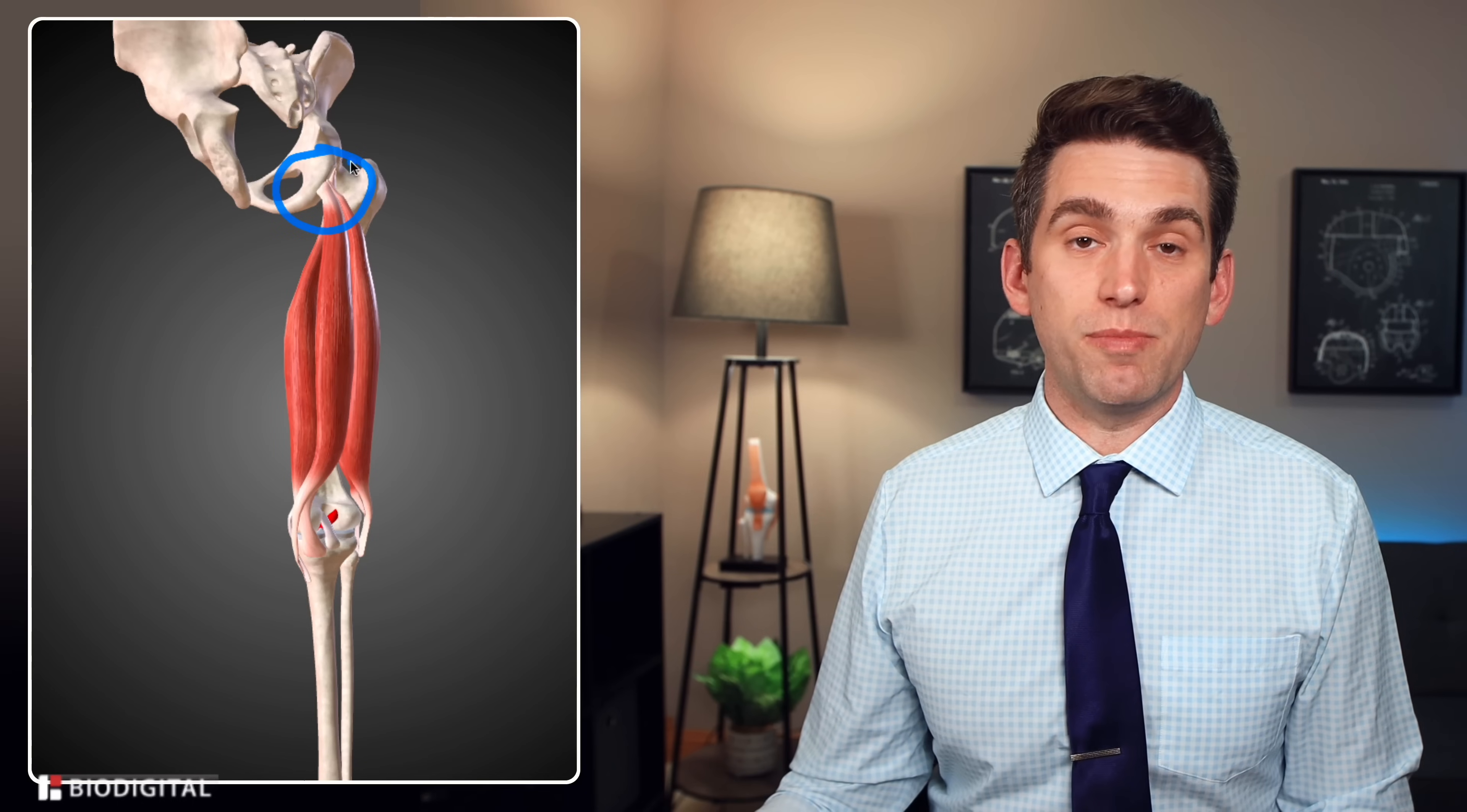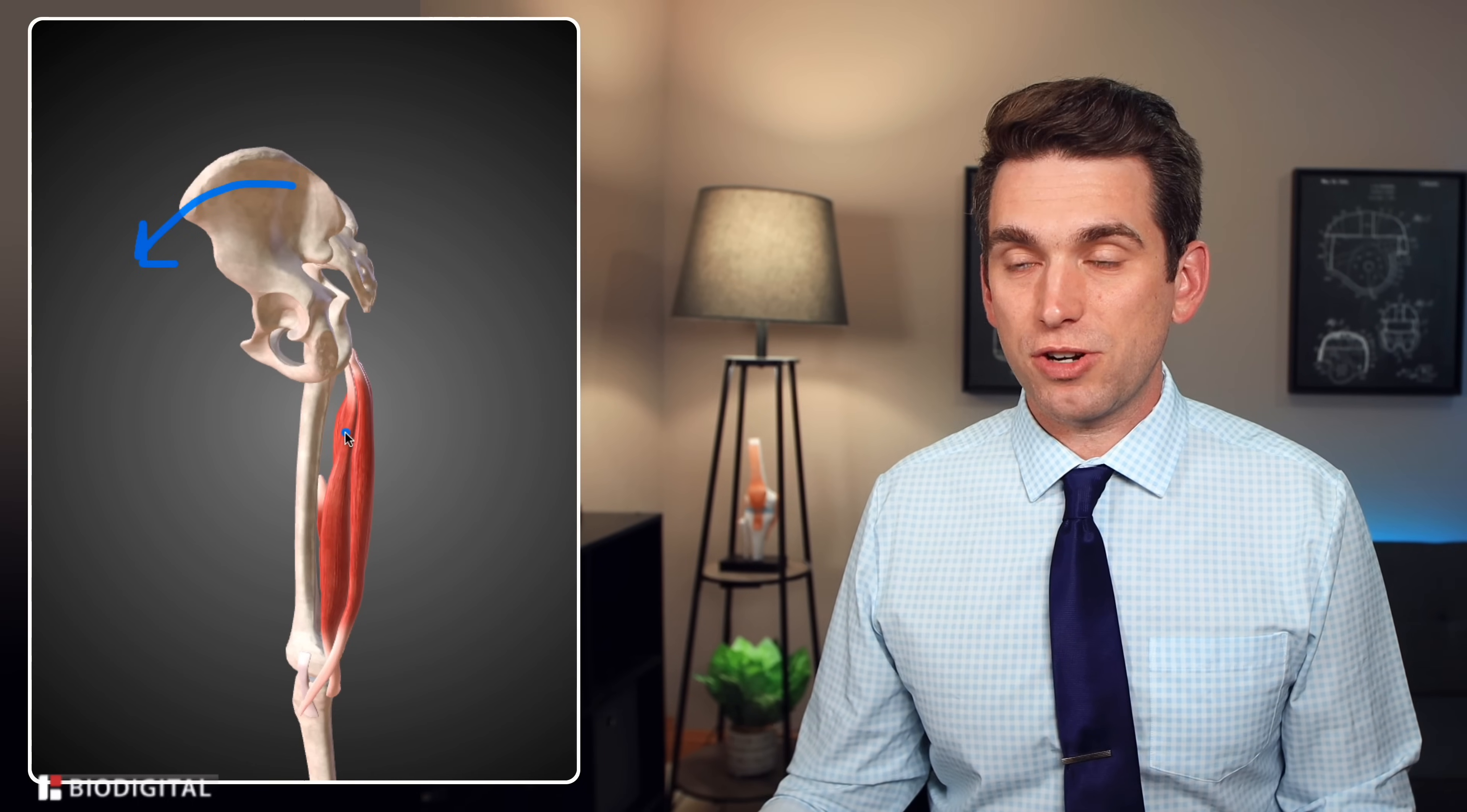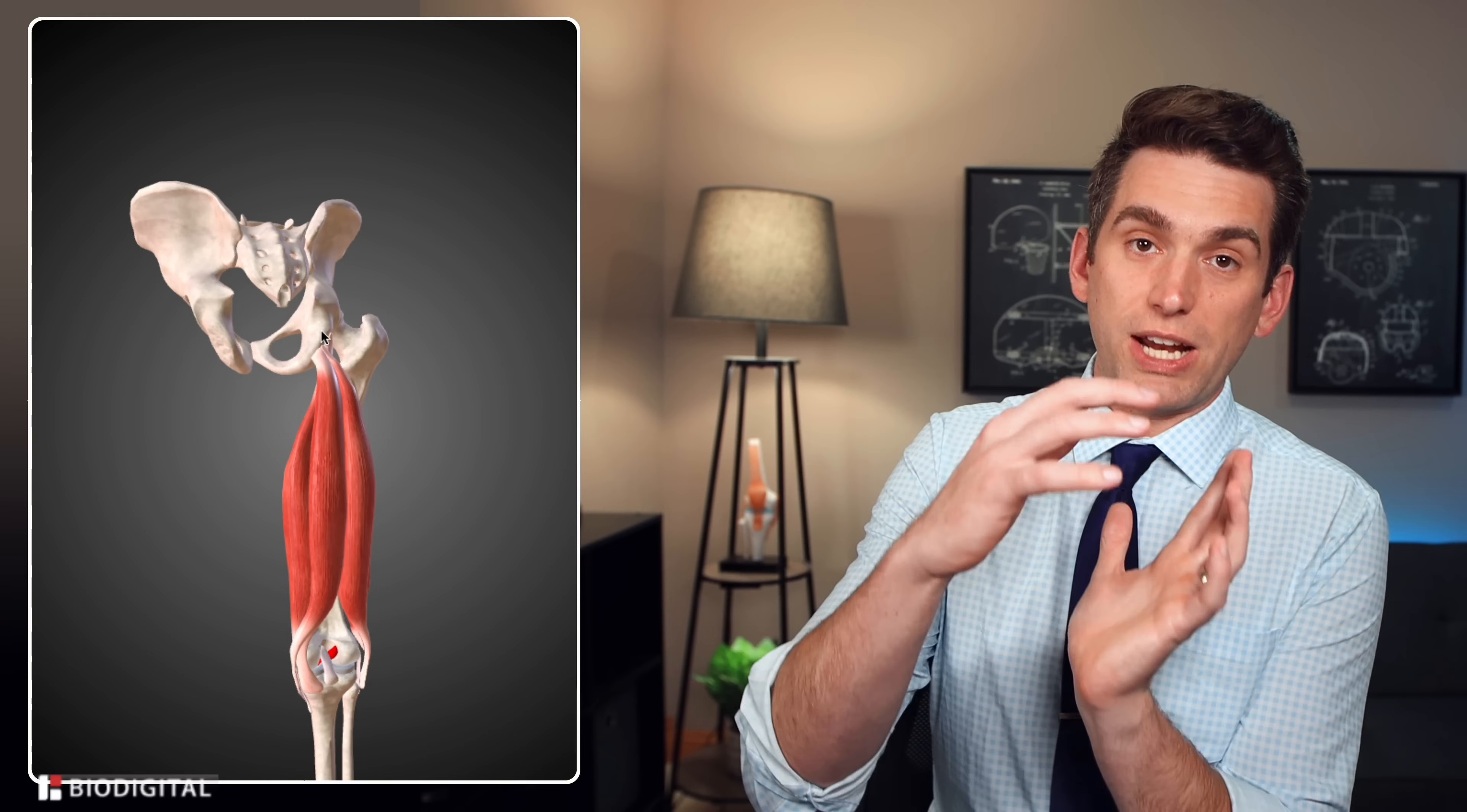But remember that the hamstring muscles originate up on the pelvis specifically an area of the pelvis called the ischium what that means is if an athlete is in some position where their trunk is bent forward with their legs straight that's going to put more stretch on the hamstrings because you're rotating the pelvis anterior and that's going to pull along the back of the thigh potentially putting stress on the hamstrings.